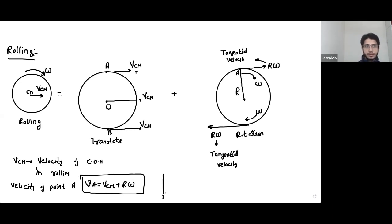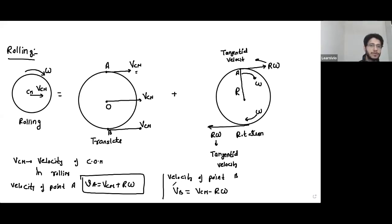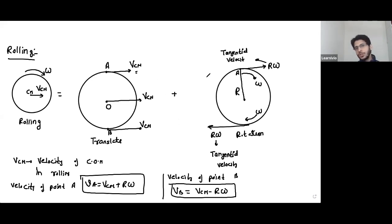For point B, the velocity is vcm minus r omega, because for point B these two velocities are acting in opposite directions. So for the top point it's vcm plus r omega, and for the bottom contact point it's vcm minus r omega. This is how we calculate velocities in rolling.